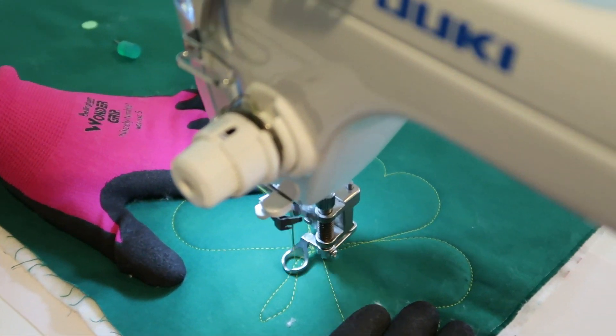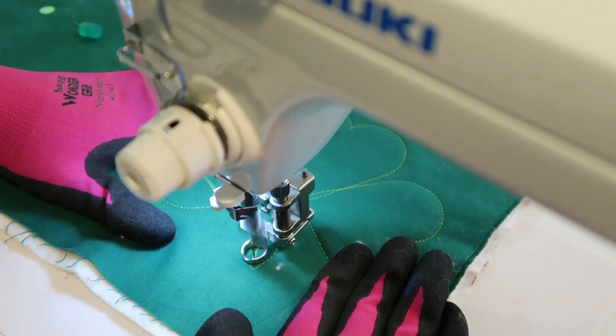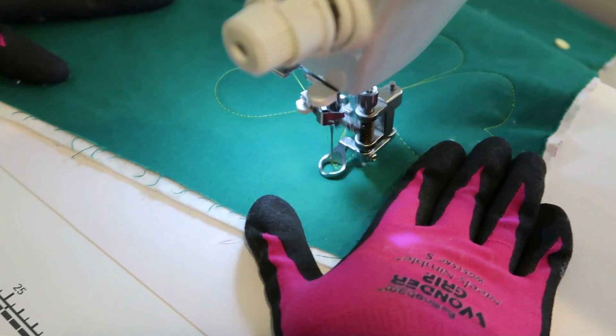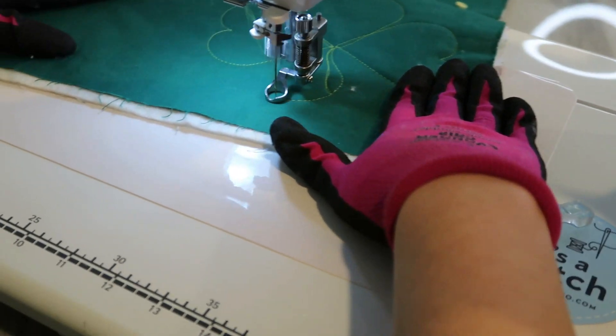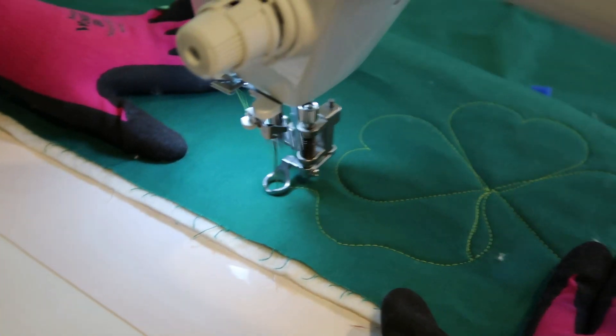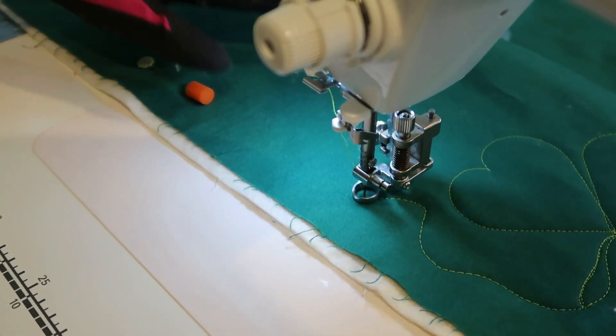And once you get right there, you've made a little shamrock. You could make a four-leaf clover if you wanted to and continue on, but I usually just make a little kind of stem. It doesn't have to be anything much, and then I'll kind of trace alongside that edge.